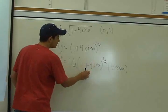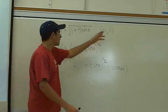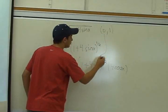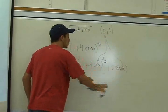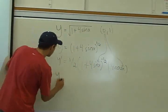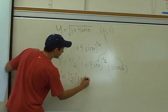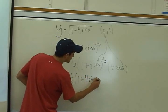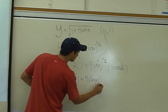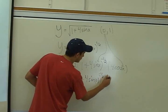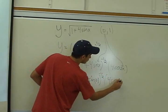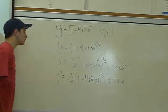And so to find the slope at a certain point, we just got to plug in the x value right here. We take it down, plug it here. So that equals 1/2 times (1 + 4sin(0)) to the negative 1/2, times 4cos(0). There you go.